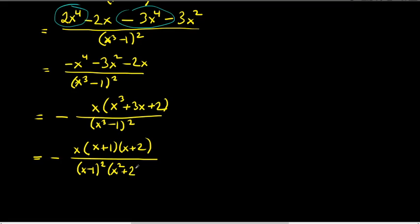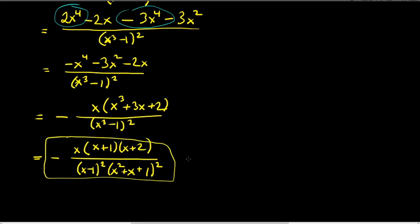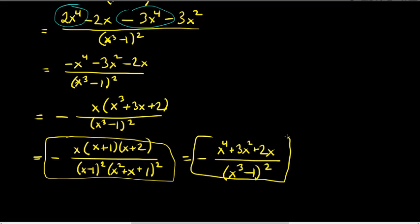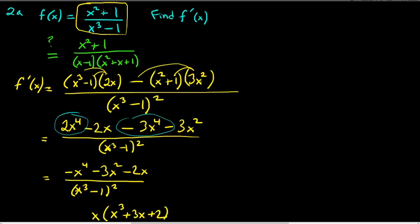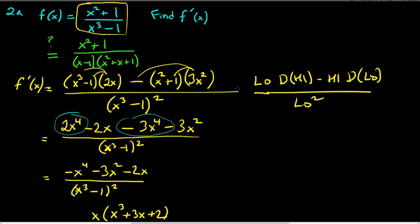Either leaving it in factored form or as the combined expression over (x³-1)² is fine. In this case we're just testing whether you know the quotient rule: low d-high minus high d-low, all over low squared. The chain rule didn't really come into play here, but in many cases it will.